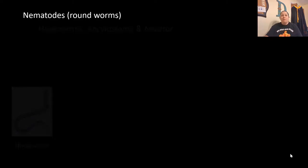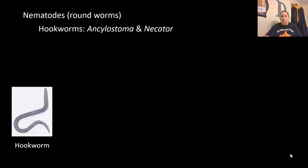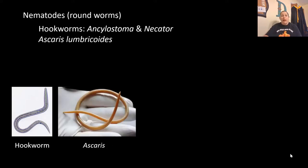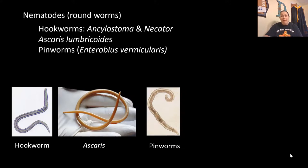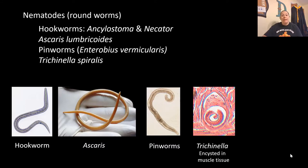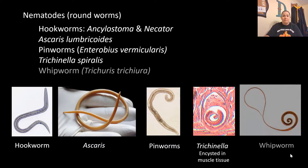Nematodes are roundworms. Examples include hookworms — species such as Ancylostoma and Necator — as well as Ascaris lumbricoides, pinworms (Enterobius vermicularis), Trichinella spiralis, and whipworms (Trichuris trichiura).